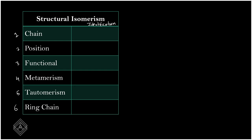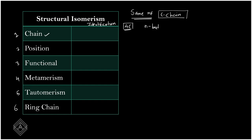The first type is chain isomerism. For example, consider compounds with four carbons. One is N-butane, where all four carbons are in a series — drawn in a straight chain, that gives you N-butane.